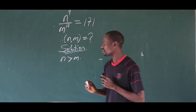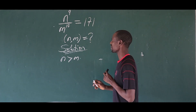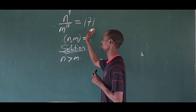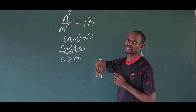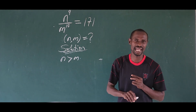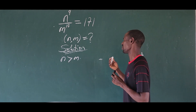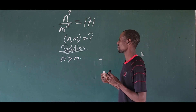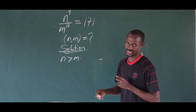So if n must be greater than m, how do we figure this out? If you decide to multiply through by n to the power of 10, then you're going to have some challenge. If you decide to divide through by n to the power of 9, you also have a great challenge. So what is best to do here is to use a simple logic to solve it.